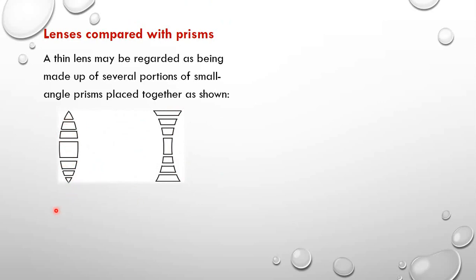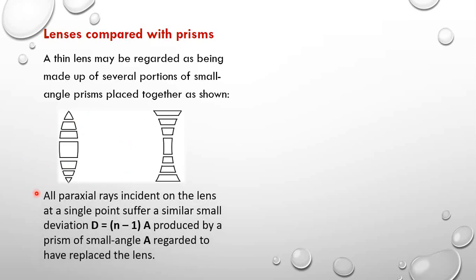The deviation for a small angled prism — recall that D is equal to (N minus 1) times A — is the same deviation that a lens can undergo. When all parallel rays incident on the lens at a single point suffer a similar small deviation D, equal to (N-1)A produced by a prism of small angle A, the deviation of the thin lens is given as the deviation of a small angled prism.